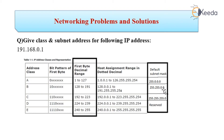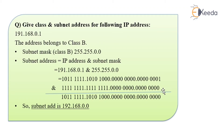When I perform the AND operation, I get the subnet address. 191.168.0.1 belongs to Class B, the subnet mask is 255.255.0.0. I have to convert this in IPv4 binary format and then perform an AND operation. 191.168.0.1 gives me this particular binary value, and 255.255.0.0 gives me this particular value.